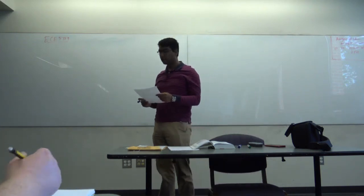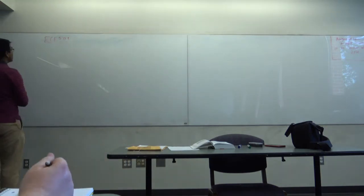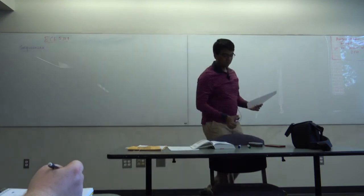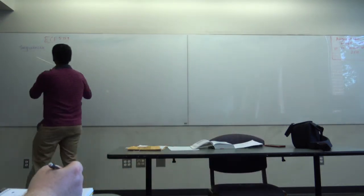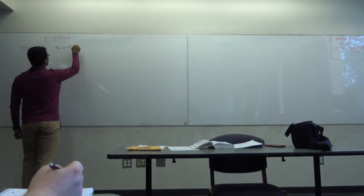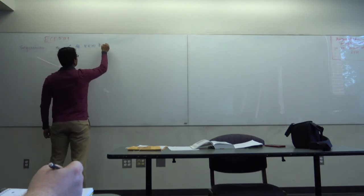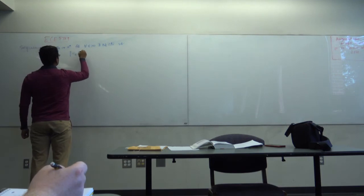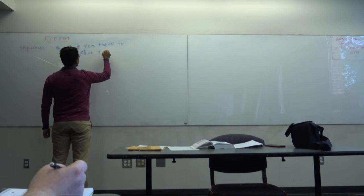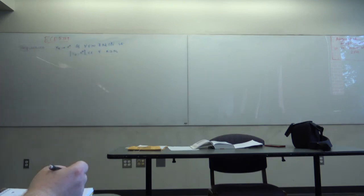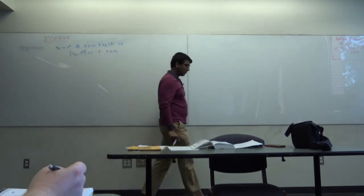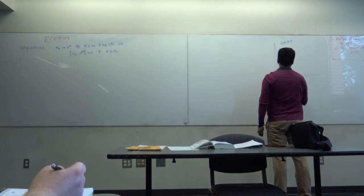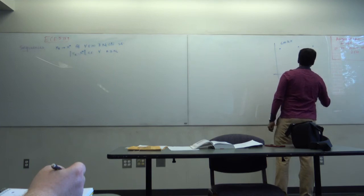We will get started with the second lecture and continue our discussion on sequences. So, xk converges to x* if and only if for every epsilon greater than 0, there exists N(epsilon) in the natural numbers such that the norm of xk minus x* is less than epsilon for all k greater than or equal to N(epsilon). Not all sequences converge—for example, cos(kπ) goes between positive 1 and negative 1, so it is not a convergent sequence.